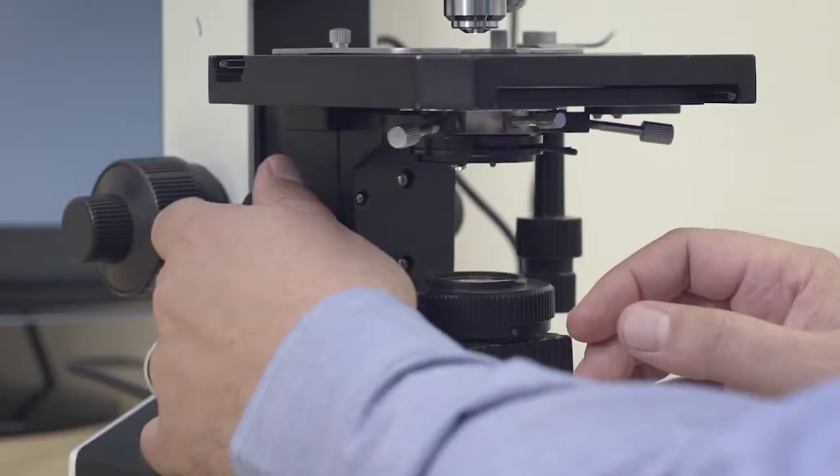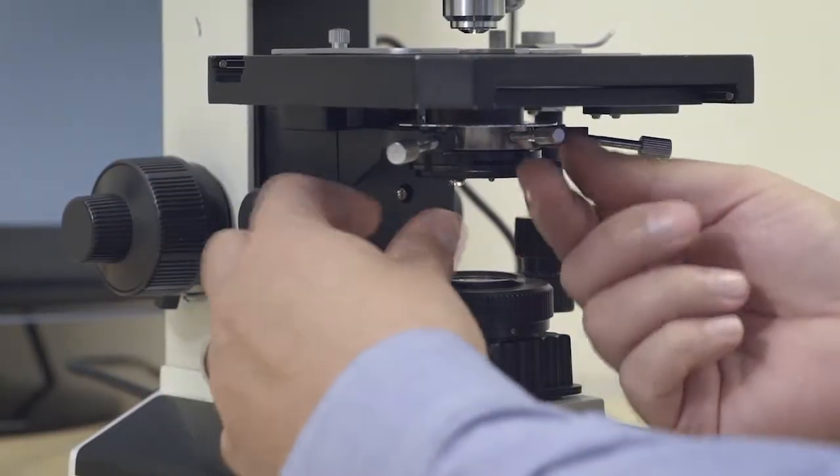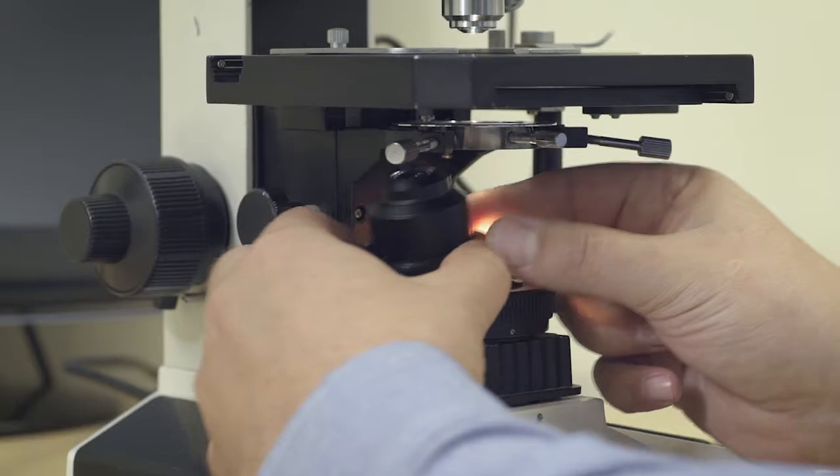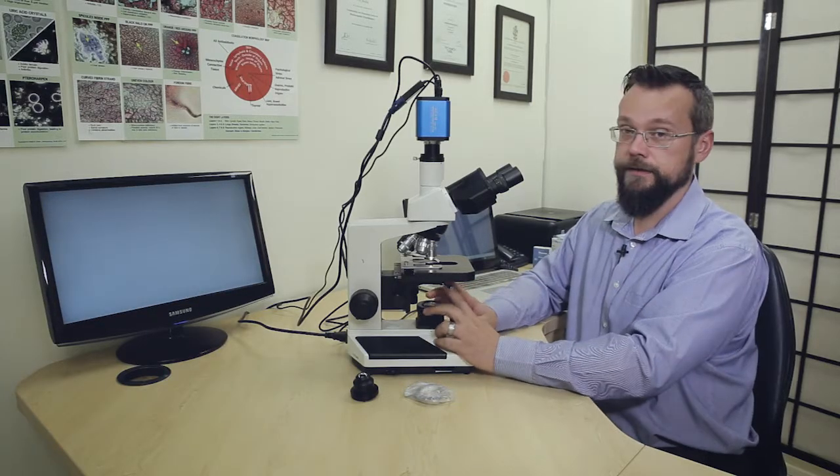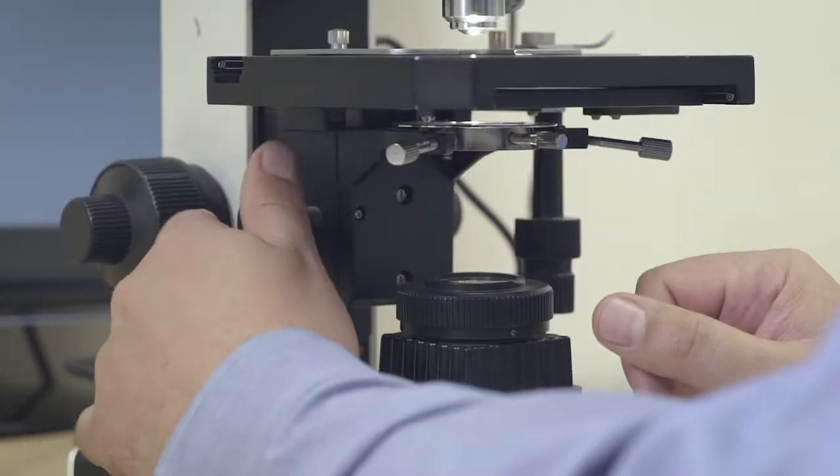So we're going to just remove the Brightfield condenser. And then we're going to remove the entire condenser holding screw here. Let's lower it.